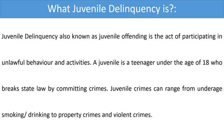Now come to the questions. We are going to discuss the main theme of the paragraph: what juvenile delinquency is. Juvenile delinquency, also known as juvenile offending, is the act of participating in unlawful behavior and activities. A juvenile is a teenager under the age of 18 who breaks state law by committing crimes. Juvenile crimes can range from underage smoking or drinking to property crimes and violent crimes.